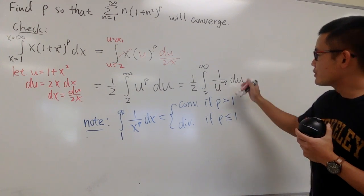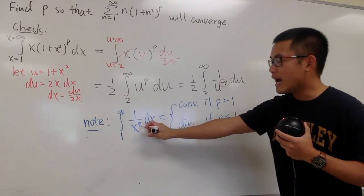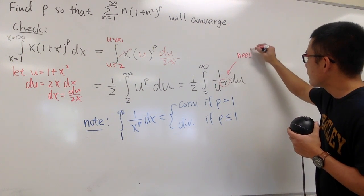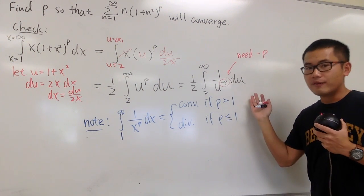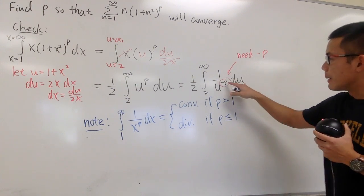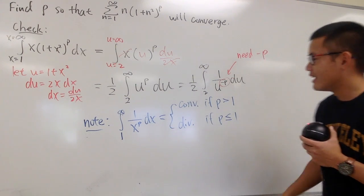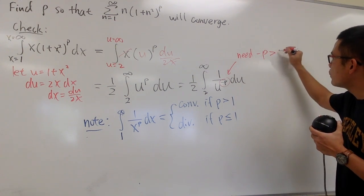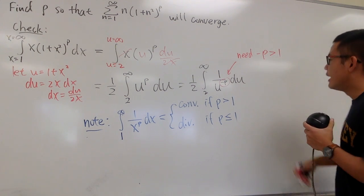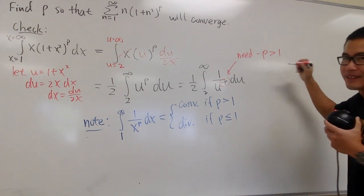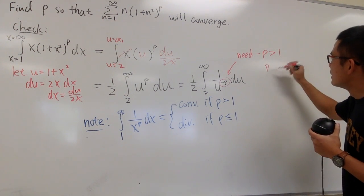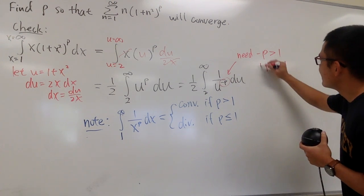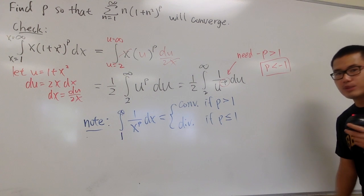So as you can see, what I need to do is, we need to have negative p. I'm just looking for convergence. I want the power here, which is the same as this power, to be greater than 1. So in my case, I need negative p to be greater than 1. And from here, we can divide both by negative 1, so we can say p has to be less than negative 1. That's the conclusion we have.